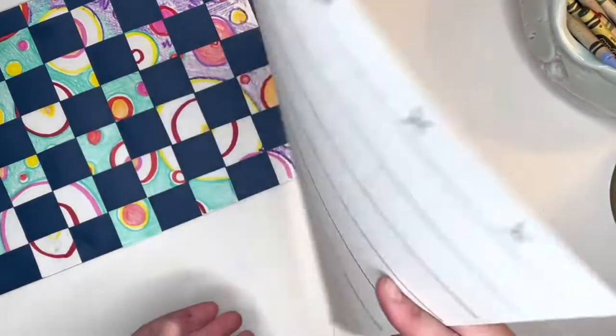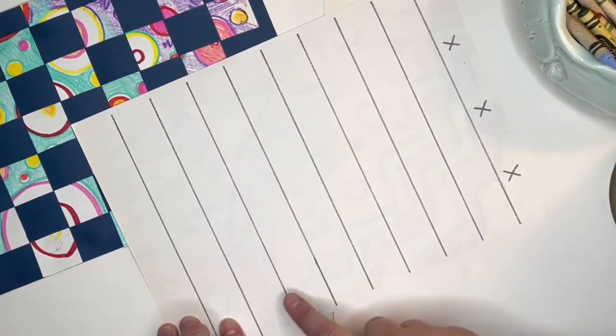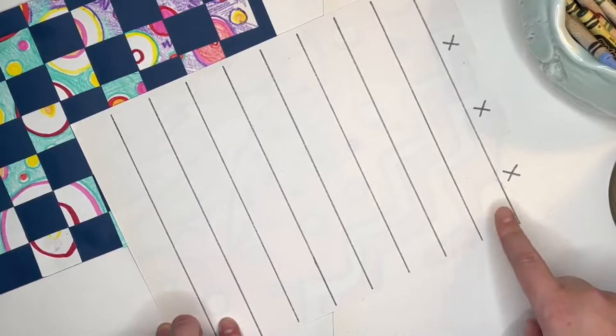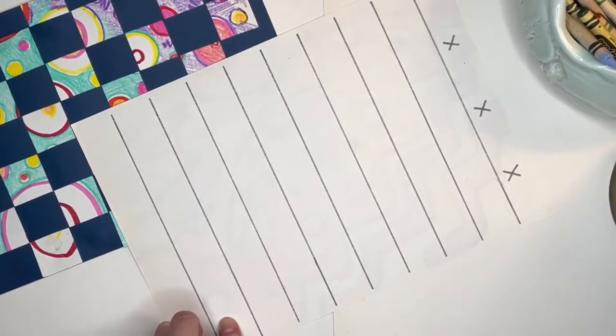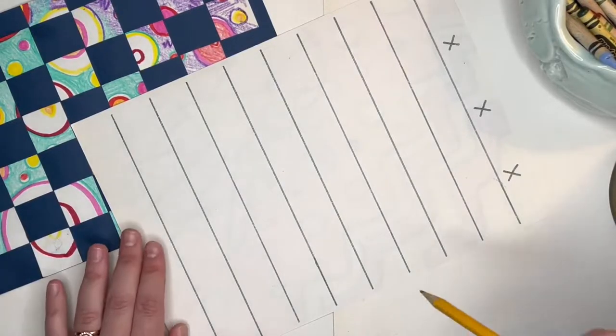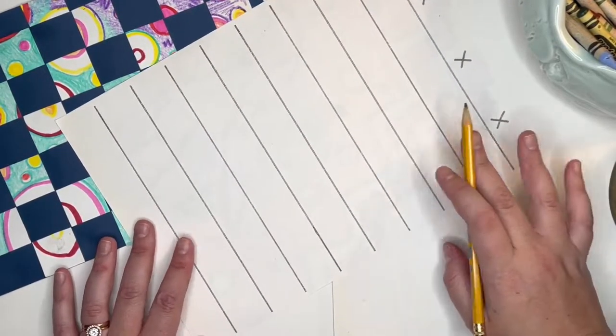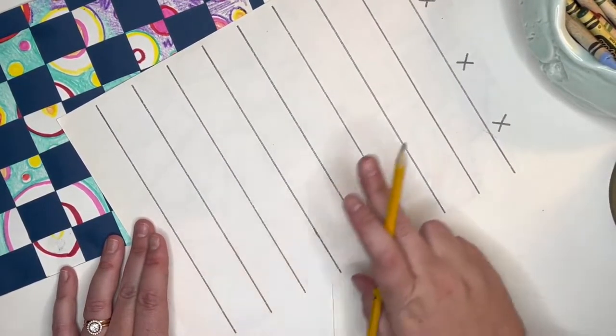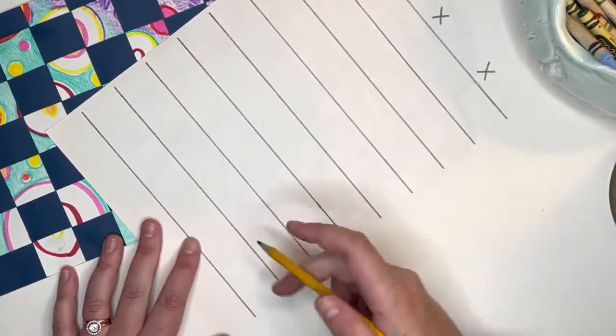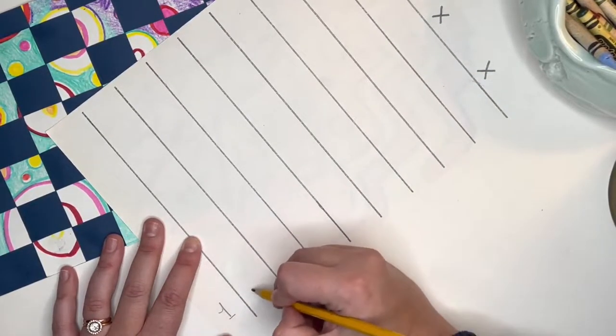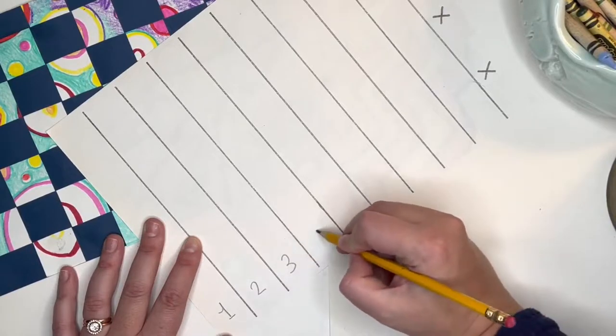Once you have done that, we are now going to flip our paper over and label the different strips. I'm going to go ahead and use pencil as I hope you do too. Let's go ahead and first start here on this side that's not by the X's with a number one, two, three, four,